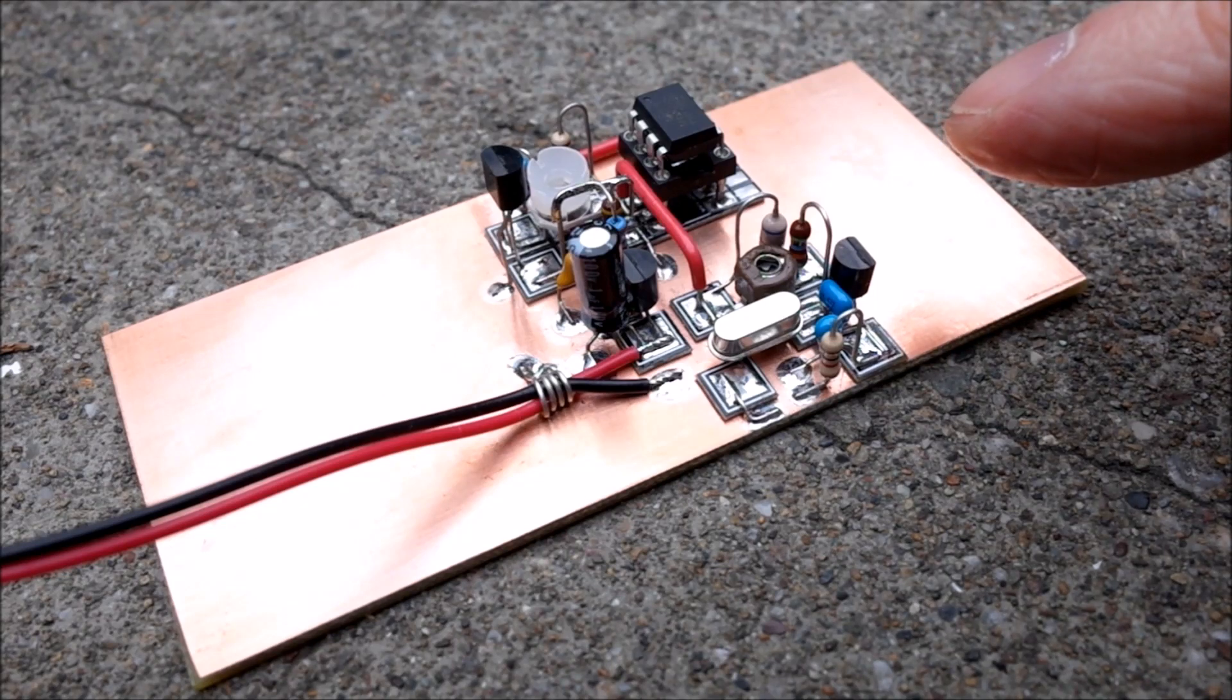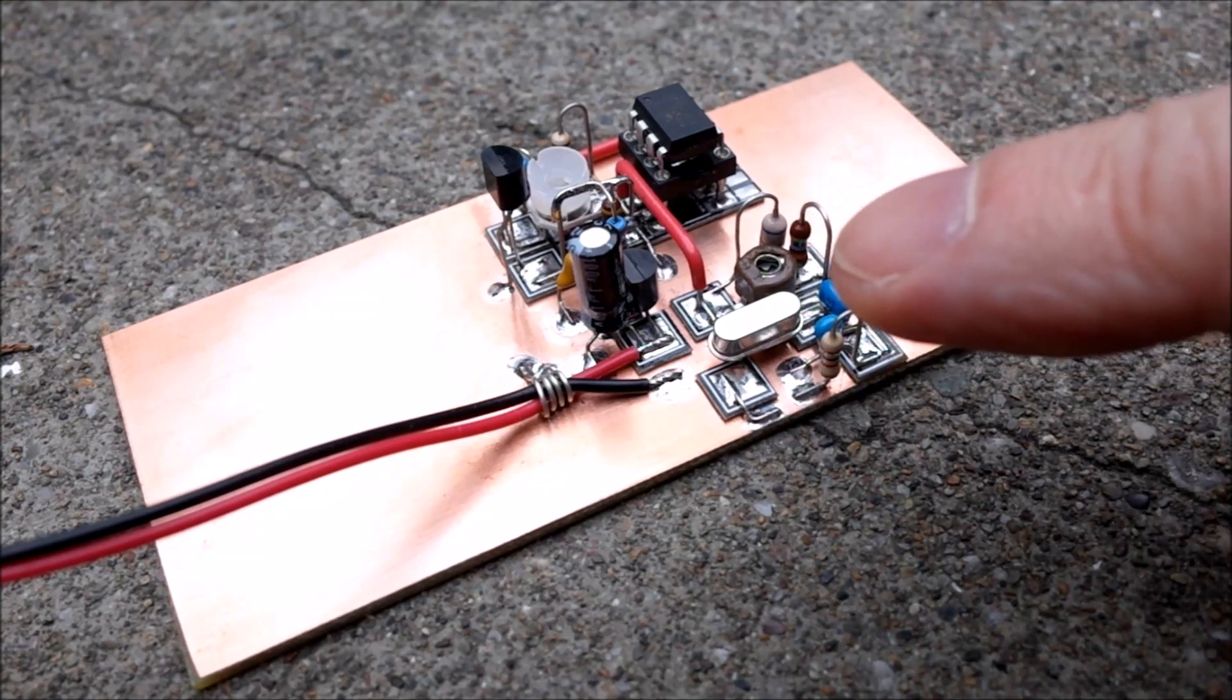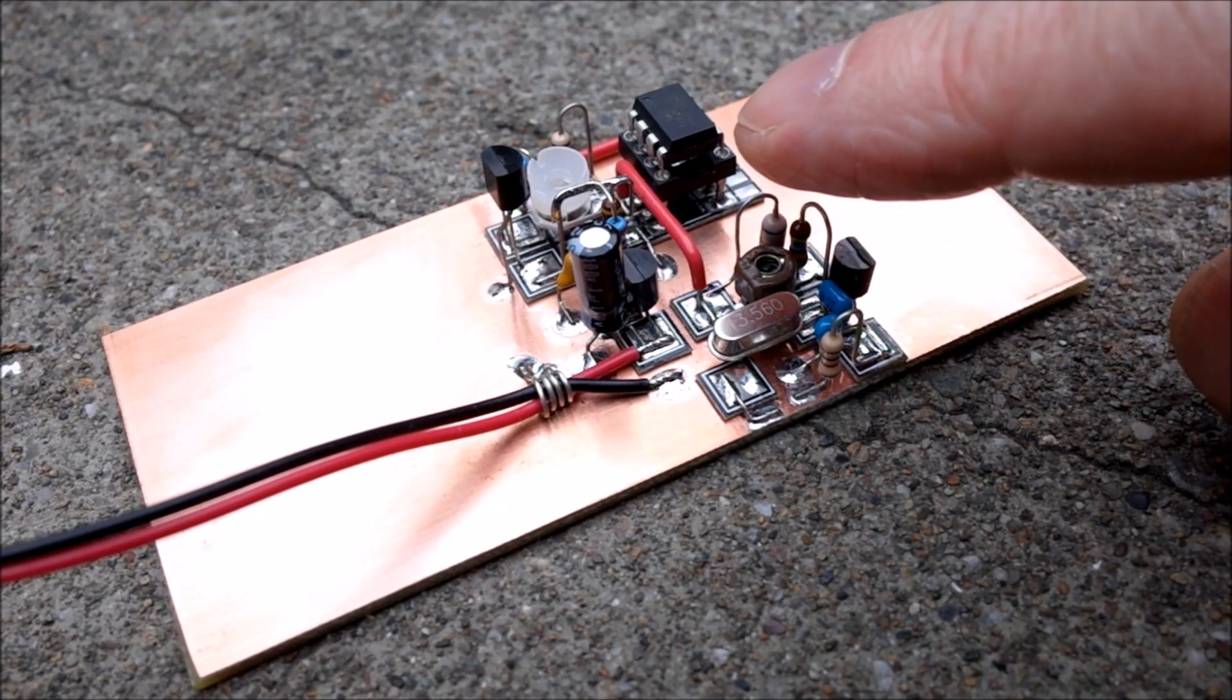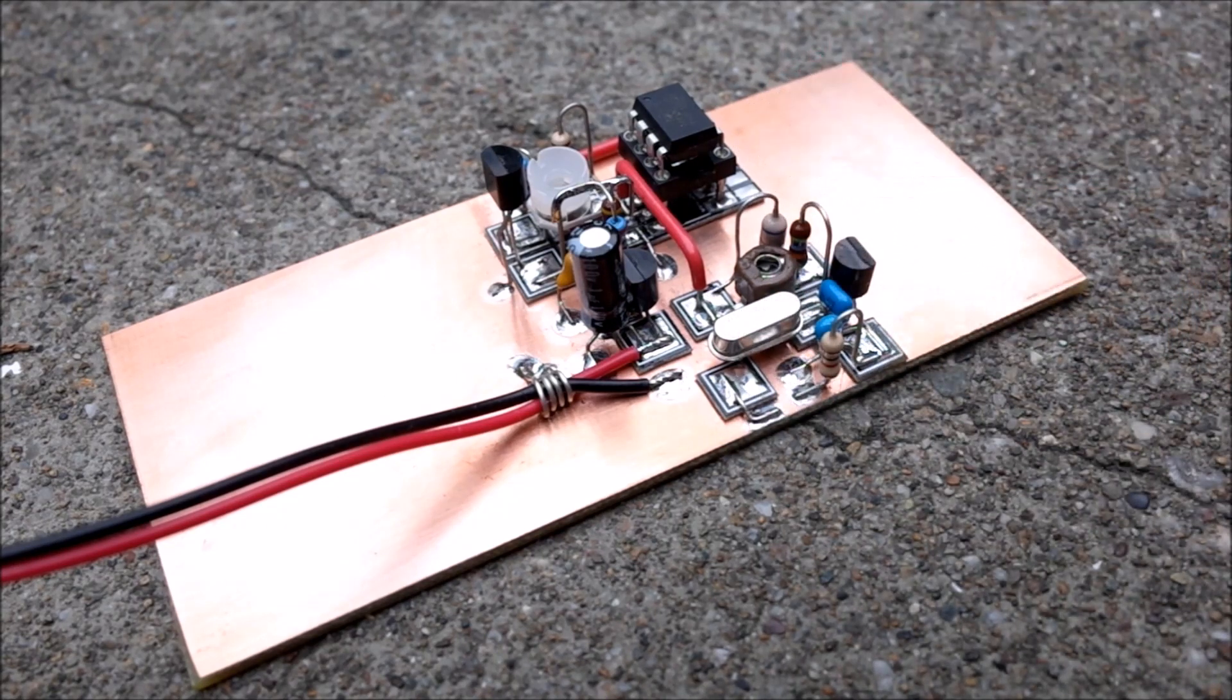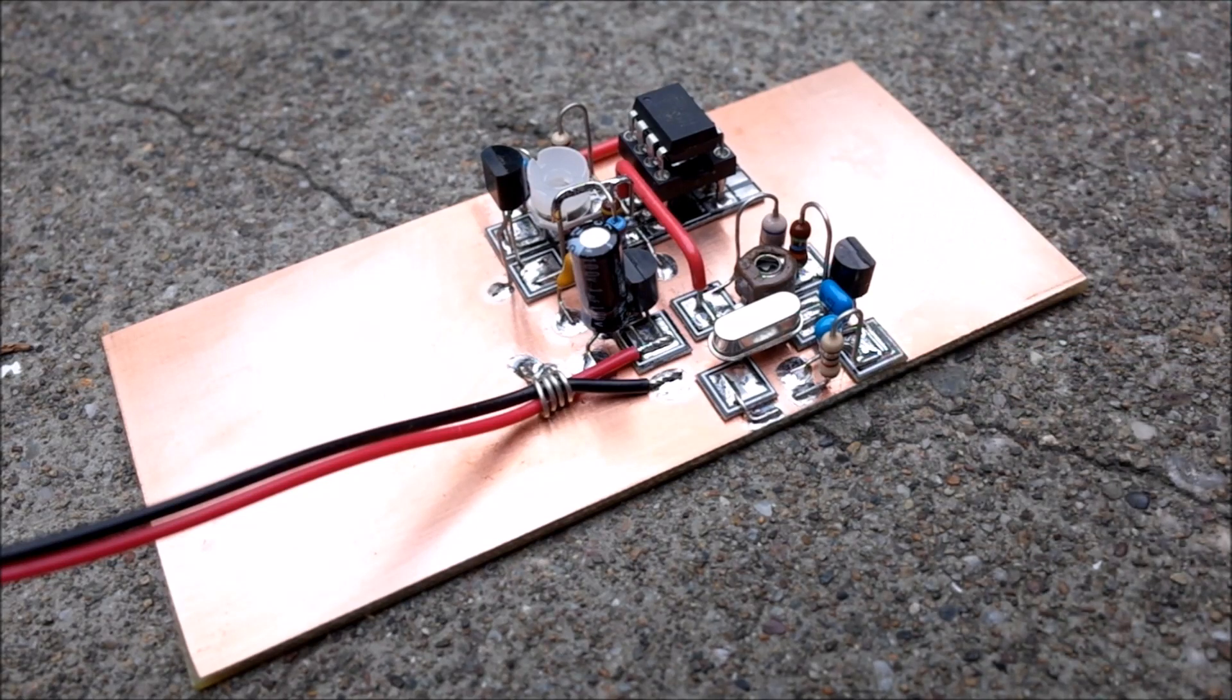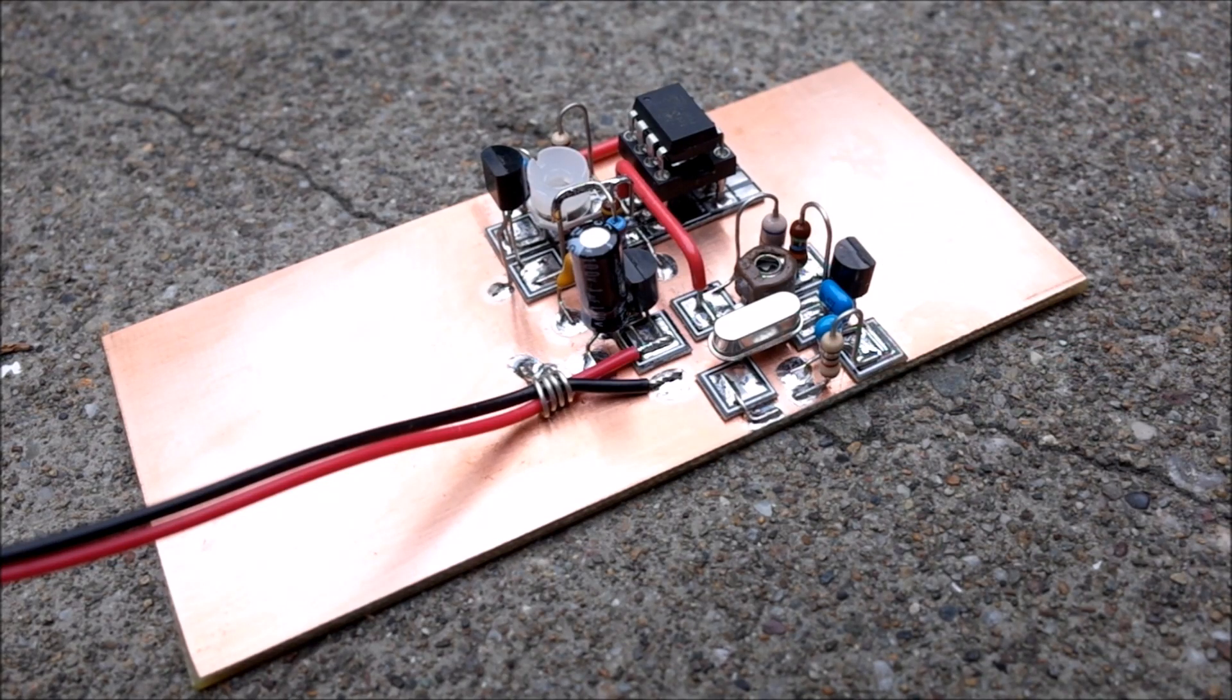It keys this oscillator. There's the crystal, there's the trim cap. Behind the trim cap you can see the molded choke and the transistor, which I think is a 2N3904, but a 2N2222 or any general purpose NPN silicon transistor would probably work great.